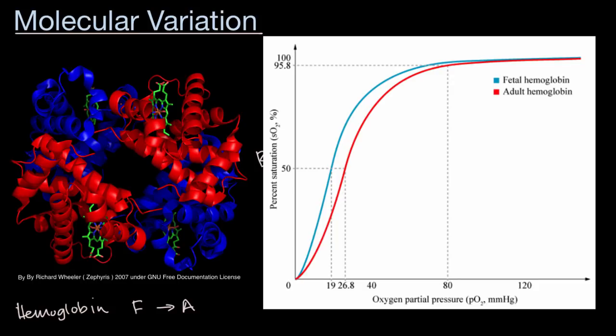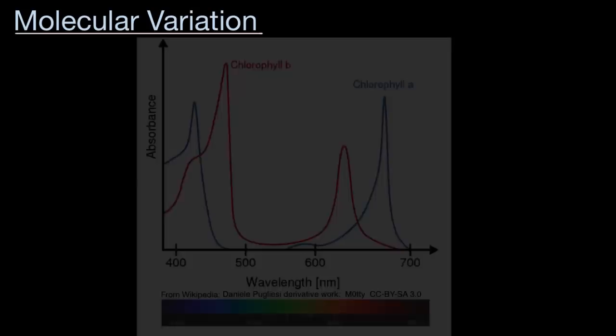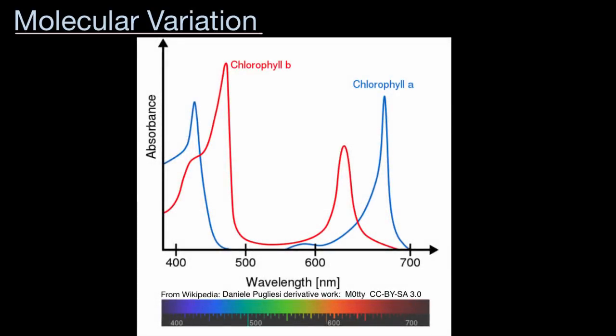And it's not just hemoglobin where we see this molecular variation. Plants and other organisms that conduct photosynthesis contain multiple types of chlorophyll. Remember, chlorophyll is a very important molecule in capturing light energy, which can then be used to help synthesize carbohydrates in things like plants. And here we see how two different chlorophyll molecules, both that would be found in plants, how well they absorb light of different frequencies.